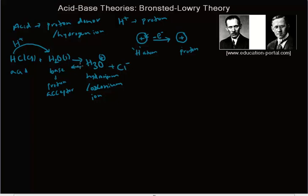In the reverse reaction, the hydronium ion donates a proton to the chloride ion. So in the reverse reaction, the hydronium ion acts as the Bronsted-Lowry acid, and the chloride ion, which is accepting the proton, acts as the base.